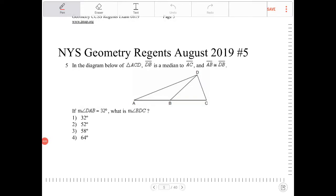In the diagram below of triangle ACD, DB is a median to AC, and AB is congruent to DB. Since DB is a median to AC, AB and BC will be the same.